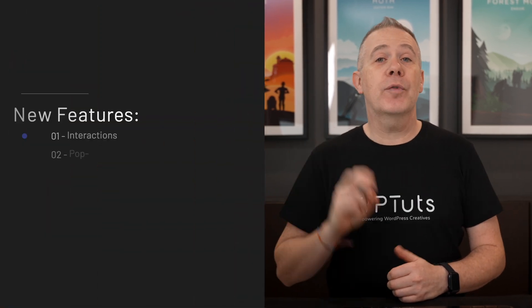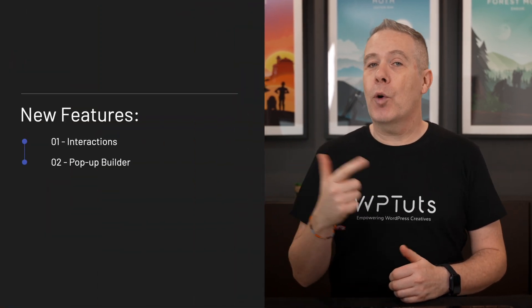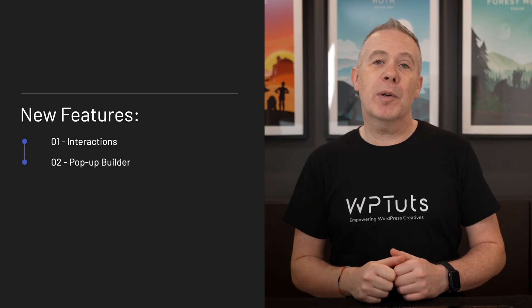It's always exciting when Bricks Builder releases an update. Today we're going to be checking out the two key new features forthcoming in 1.6. This is the beta version we're checking out, so there are a couple of little glitches and quirks, but once the final version releases they should all be ironed out. The two key new features are interactions and the pop-up builder — things that people have been asking for for quite some time. Let's take a look at a simple example and some of the ways you can start using these features when they release.